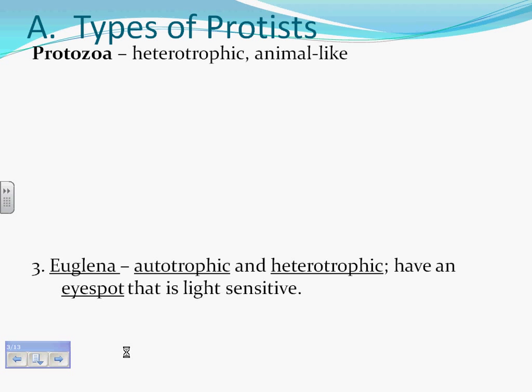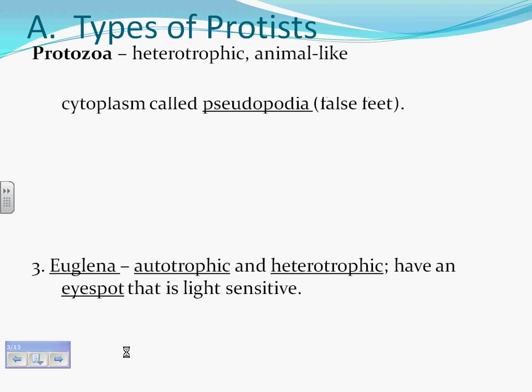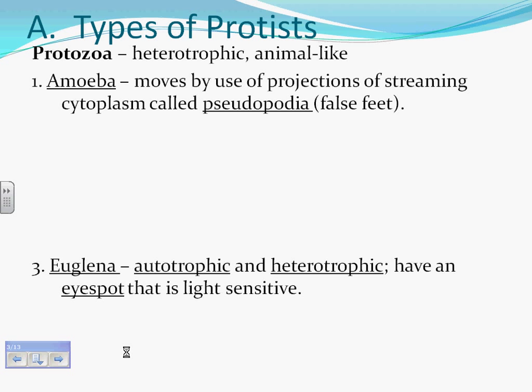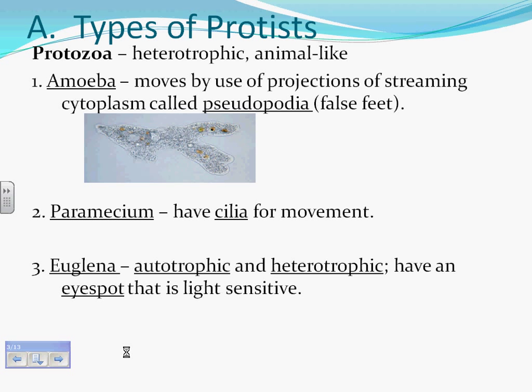Types of protists: Protozoa are heterotrophic and animal-like. Amoeba moves by use of projections of streaming cytoplasm called pseudopodia, also known as false feet. Paramecium have cilia for movement.